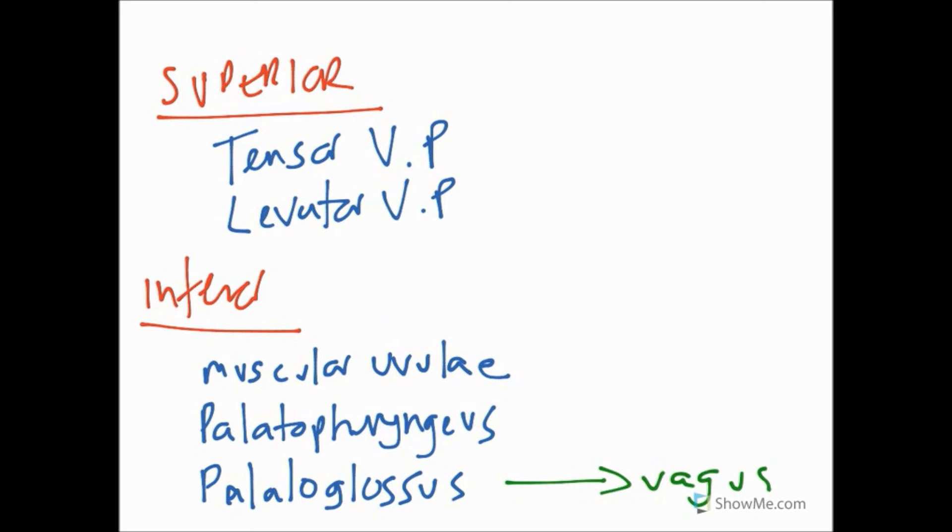There are five muscles, and we can say that the innervation here is all going to be vagus: this is vagus, this is vagus, vagus here as well, and vagus. Although we could say that generally speaking, it is pharyngeal plexus via the pharyngeal branch, which means it's the cranial accessory as well. We'll accept any of those, but we'll keep it as vagus for simplicity.